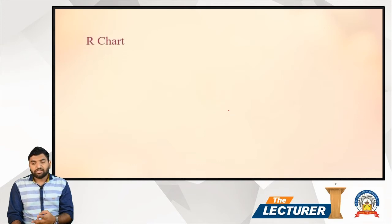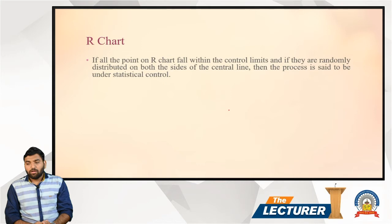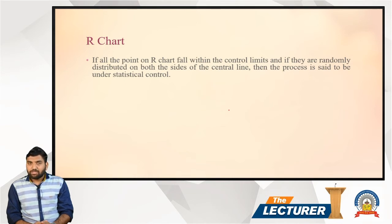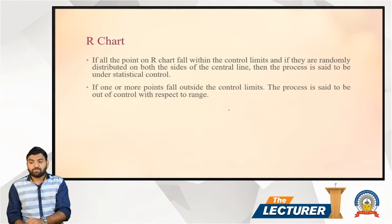The R chart is the second and last chart of charts for variables. The variable charts have two types: X-bar chart for mean and R chart for range. In the R chart, if all the points fall within the control limit and are randomly distributed on both sides of the central line, the process is said to be under statistical control. If not, the process is out of control with respect to range.